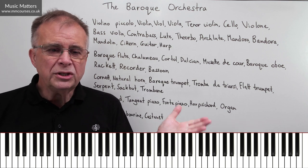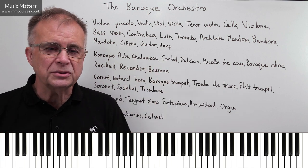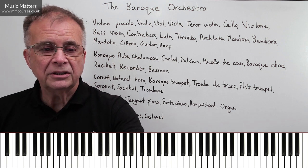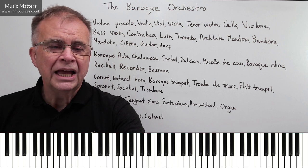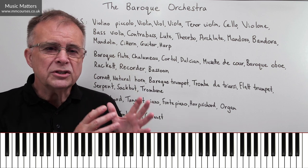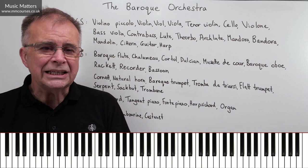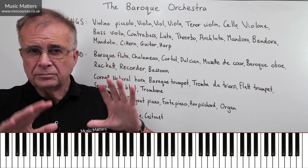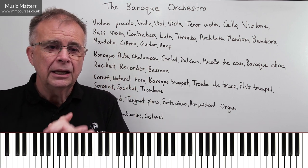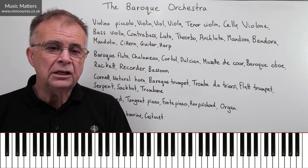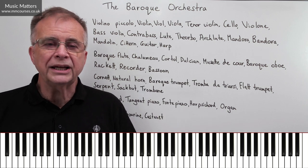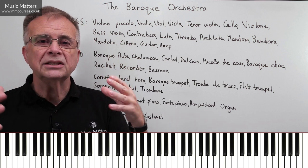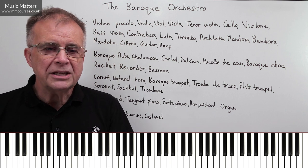There were huge variations in what 'orchestra' meant in the Baroque, because we hadn't yet reached that standardised place. So different choices of instruments, different sizes of instrumental groups, different playing styles — especially as we go round different parts of Europe and discover that different places were doing different things. We've got everything in the Baroque orchestra from very small orchestras — sometimes really no more than chamber ensembles, just one player per part — to pieces designed for larger orchestras with several players per part.